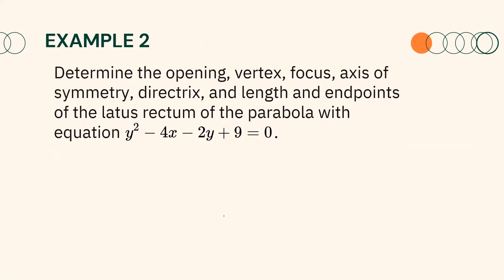Let us have another example. Determine the opening, vertex, focus, axis of symmetry, directrix, and length and endpoints of the latus rectum of the parabola with equation y squared minus 4x minus 2y plus 9 equals 0. Since the equation is given in general form, we need to rewrite it first in standard form. To do that, we isolate the squared term and the term with the same variable on one side of the equation, giving us y squared minus 2y equals 4x minus 9.